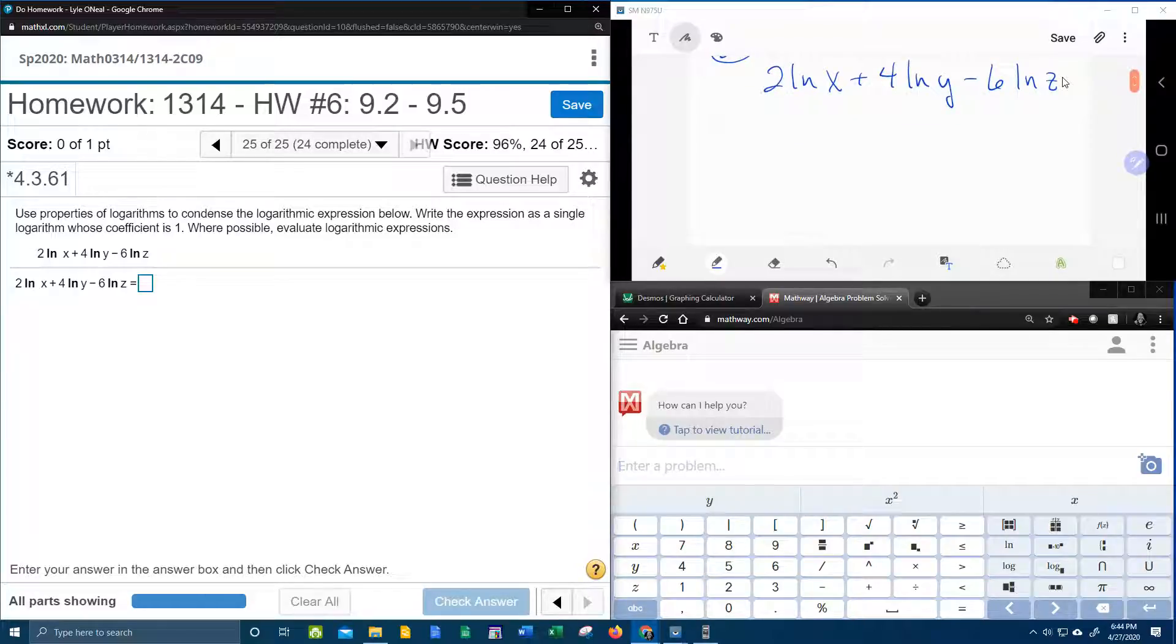First of all, let's list the properties of logarithms. We have the product rule, we have the quotient rule, and we have the power rule. Now in a previous problem, in a previous video, we said that in order to expand, you do the quotient rule if you've got a fraction, and then the product rule, and last the power rule. That was the order for expand.